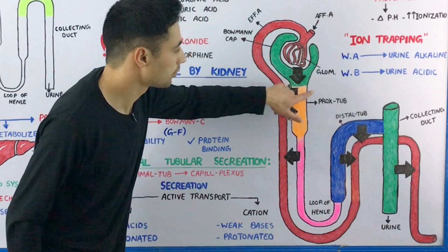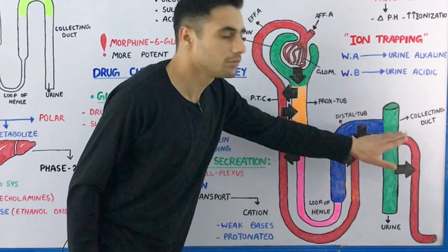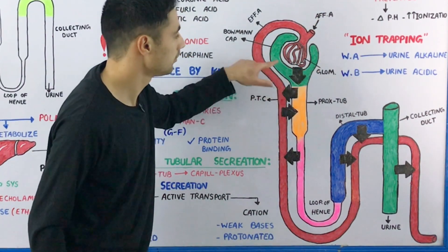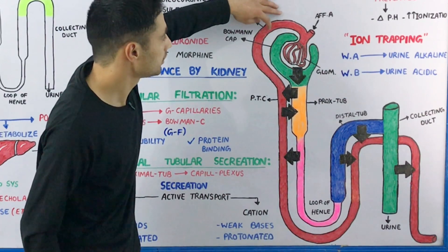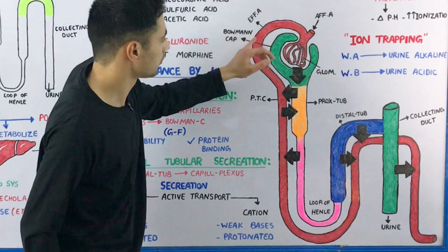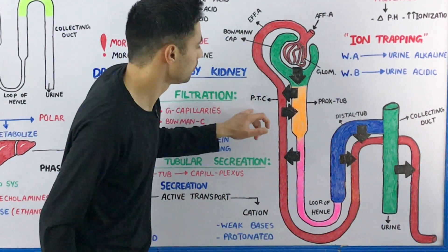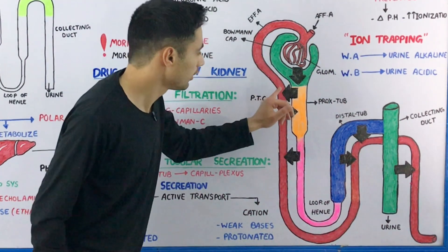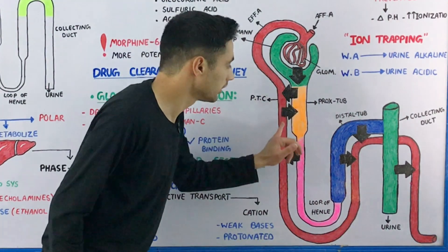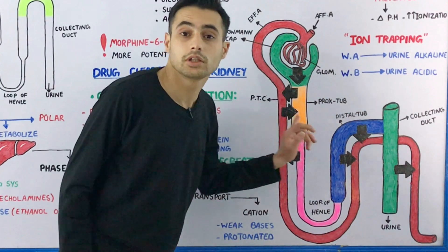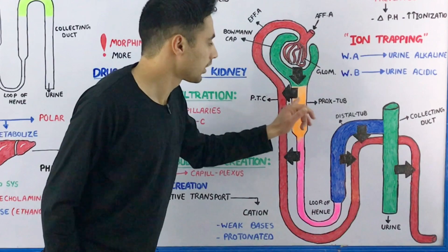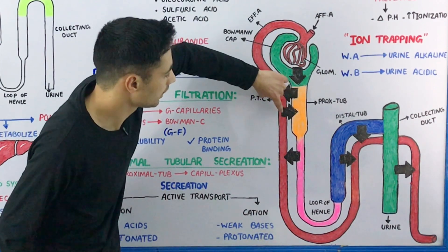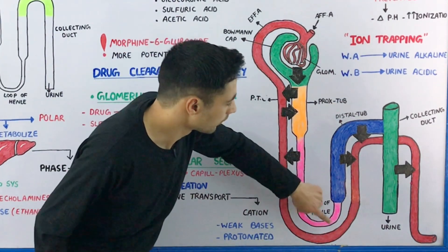In proximal tubular secretion, the efferent arteriole forms the peritubular capillary network around the proximal tubule, which continues into the renal vein and systemic circulation. The free drug is filtered into the glomerular filtrate, but drug that is protein-bound or cannot be filtered travels through the efferent arteriole into the peritubular capillary network around the proximal convoluted tubule. This drug is then actively secreted using energy into the proximal convoluted tubule.